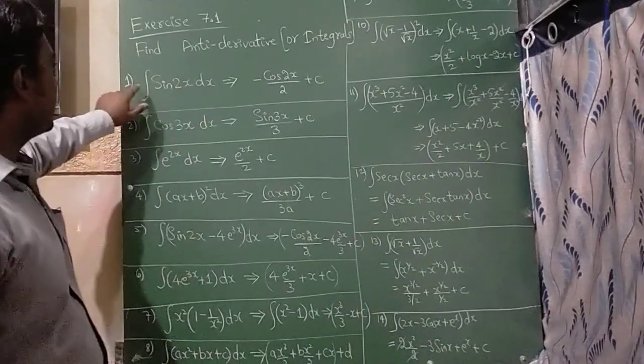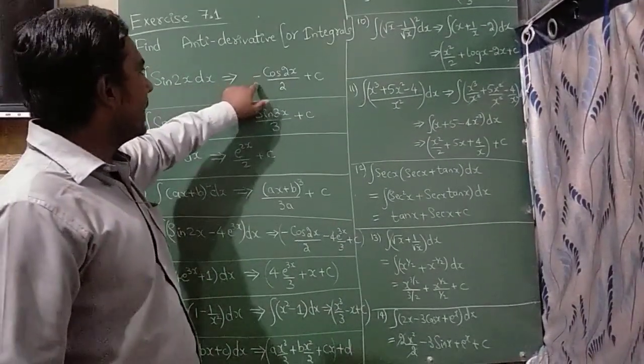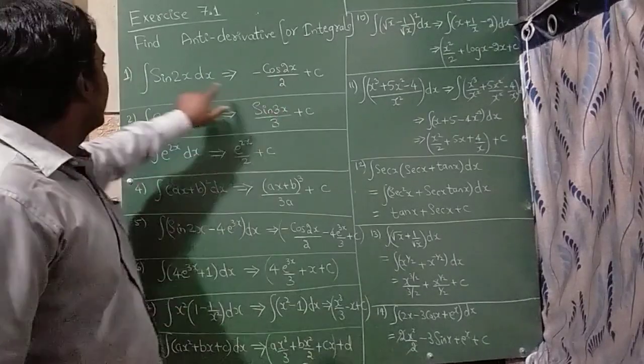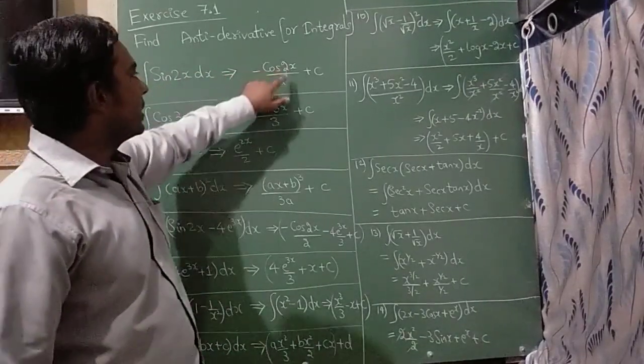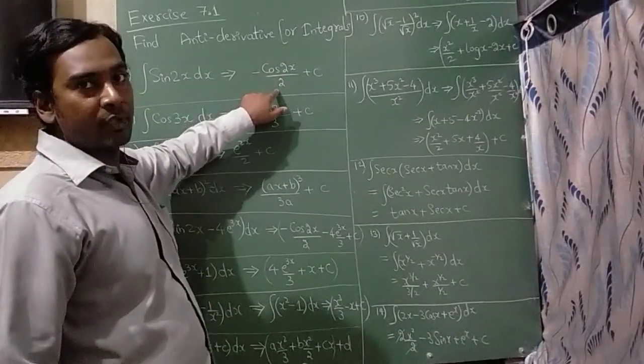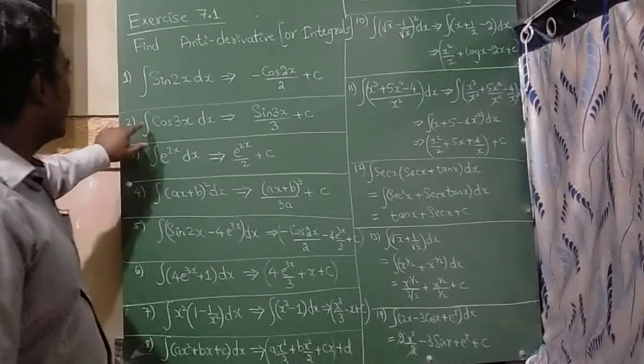The integration of sin 2x dx is minus cos 2x upon 2. There is a number 2 here, so it is 2 in the numerator and 2 in the denominator, plus c.